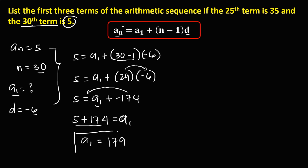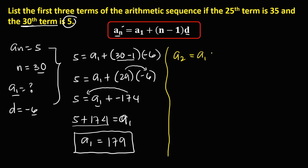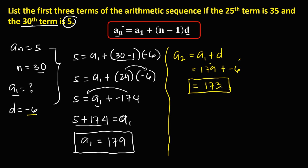This is the value for the first term. To solve for the second term, a sub 2, we use the formula a sub 1 plus the common difference. Substituting: 179 plus negative 6 gives 179 minus 6, so a sub 2 equals 173.